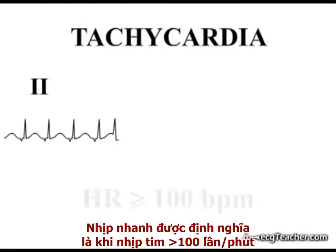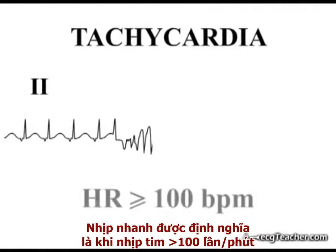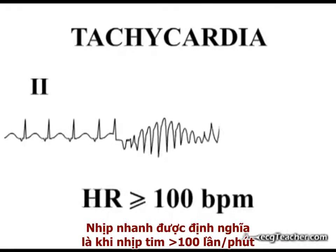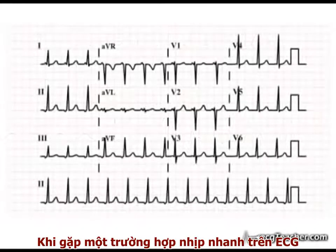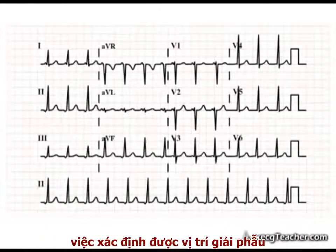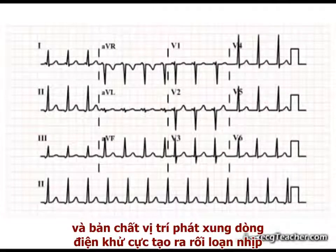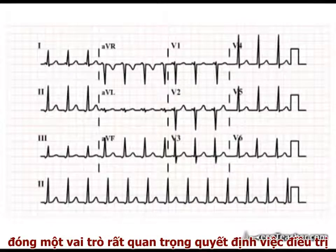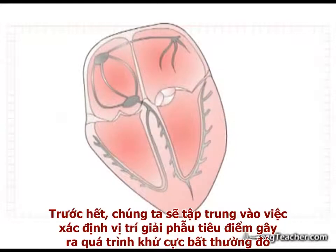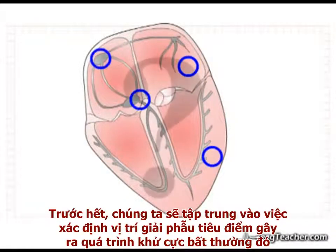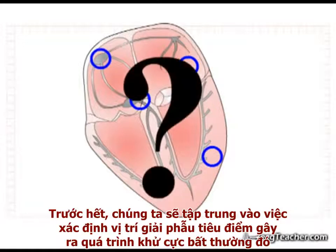Tachycardia is defined as a heart rate of 100 beats or more per minute. When faced with a tachycardia on the ECG, identification of the anatomical location and nature of the focus of depolarizing current generating the arrhythmia has a critical bearing on treatment. Initially, we will concentrate on the identification of the anatomical location of the abnormal depolarizing focus.